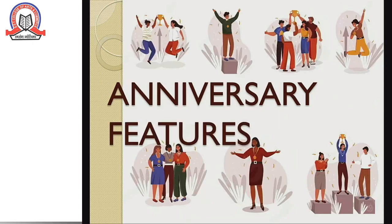Finally, we are going to discuss anniversary features. These are dated features — they must be published at a particular time or date. For example, on 14th February, love and relationship related features are published in newspapers. Another example: World AIDS Day is observed on 1st December, so features regarding awareness programs about AIDS should be published on or before 1st December.